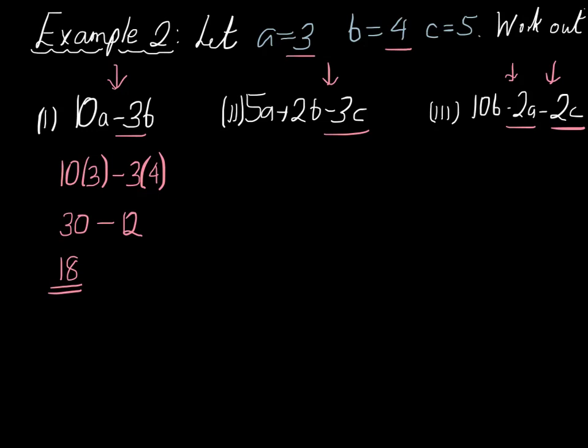Let's quickly do the other two examples. 5a plus 2b subtract 3c, so 5 lots of 3, plus 2 lots of 4, subtract 3 lots of 5. 5 times 3 is equal to 15, plus 2 times 4 is equal to 8, subtract 3 times 5, which is 15. If we add that up, we can see that 15 take away 15 is nothing, and we're just left with 8. So that's our answer.